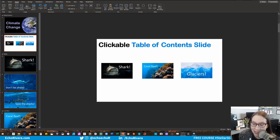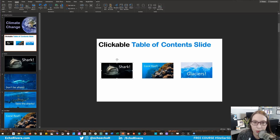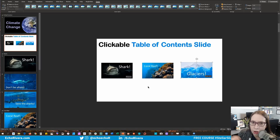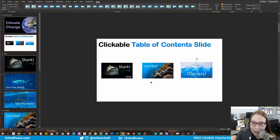Super easy. Prezi is not the only software that lets you have a non-linear presentation, and PowerPoint makes it really easy to set up. Now you probably noticed that annoying zoom transition, so we're going to disable that because people don't like it. All you have to do is click on one of the thumbnails, go up to the Zoom tab, and uncheck Zoom Transition. You have to do that one at a time — not ideal, but still really fast and easy. Now it's just a regular transition with no nauseating zoom effect.